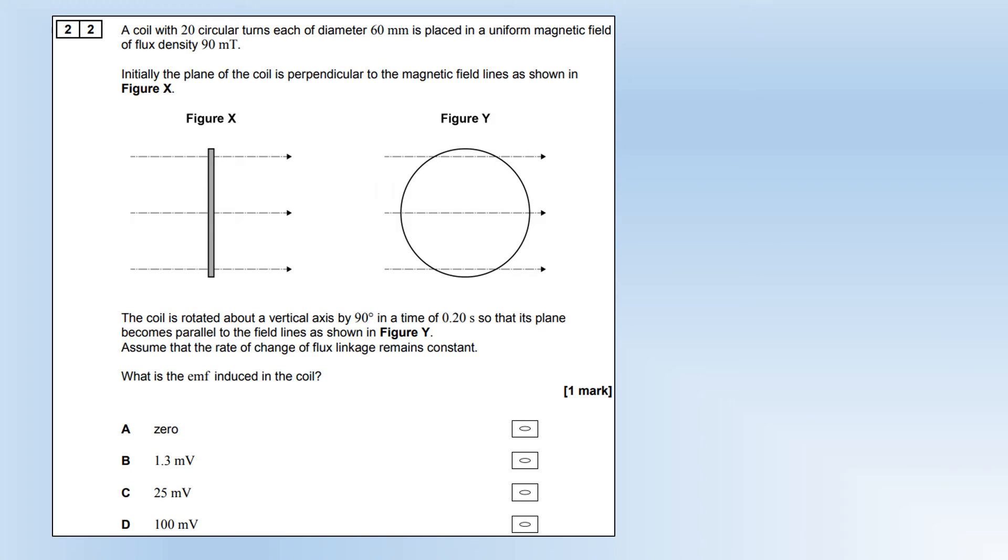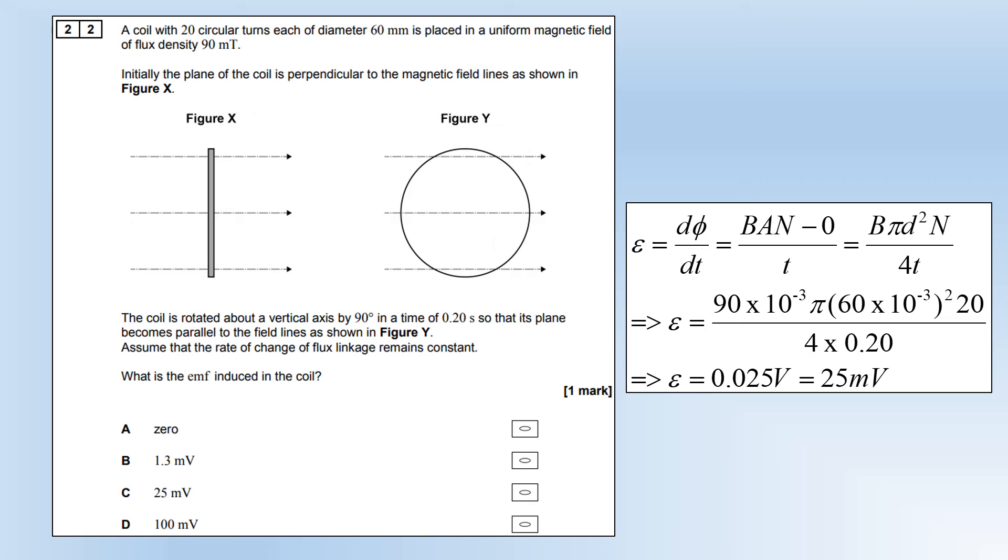A coil of 20 circular turns, each of diameter 60 millimeters, is placed in a uniform magnetic field of flux density 90 millitesla. Initially, it's perpendicular to the magnetic field. The coil is rotated by 90 degrees in a time of 0.2 seconds, so it becomes parallel. Assume the rate of change of flux linkage remains constant. What is the EMF induced in the coil? The flux linkage is going to change from a maximum to zero as you rotate it 90 degrees. If we can figure out the change in the flux linkage and divide it by the time, that calculates the rate of change of flux linkage and therefore calculates the EMF. We've been given the flux density. We can calculate the area using pi D squared over 4. We know the number of turns and we know the time. We plug our numbers in, and that gives us the EMF. We're essentially just using Faraday's law here, and we get option C.